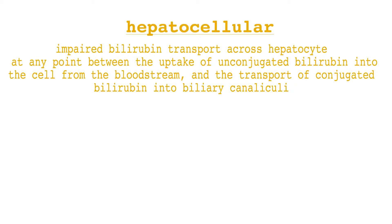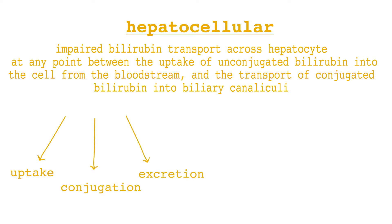Hepatocellular jaundice occurs due to impaired bilirubin transport across the hepatocyte at any point between the uptake of unconjugated bilirubin into the cell and the transport of conjugated bilirubin into the biliary canaliculi. In hepatocellular disease, interference in the three major steps of bilirubin metabolism — uptake, conjugation and excretion — usually occurs. Excretion is the rate-limiting step and is usually impaired to the greatest extent. As a result, conjugated bilirubin predominates in the serum.